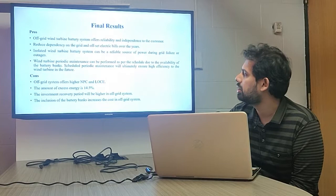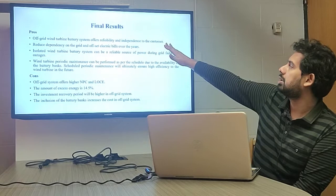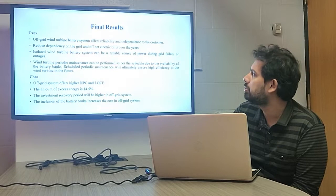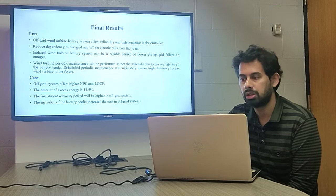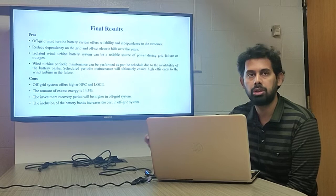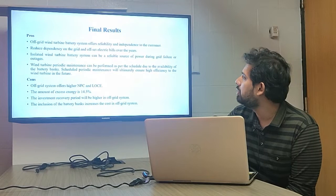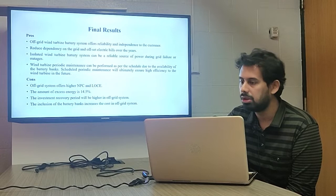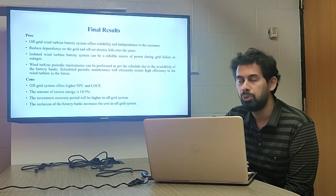Every project has pros and cons. The pros of this project include: the off-grid wind and battery system offers reliability and independence to the customer; reduced dependency on the grid offsets electricity bills; and an isolated wind turbine battery system can be a reliable source of power during grid failure or outage. If natural calamities occur, since the customer is not dependent on the grid, they can get power from the wind turbine or from the battery storage system.